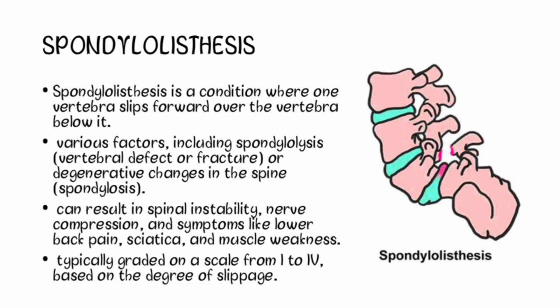Spondylolisthesis is a condition where one vertebra slips forward over the vertebra below it. This displacement can occur due to various factors, including spondylolysis — a vertebral defect or fracture — or degenerative changes in the spine. Spondylolisthesis can result in spinal instability, nerve compression, and symptoms like lower back pain, sciatica, and muscle weakness.